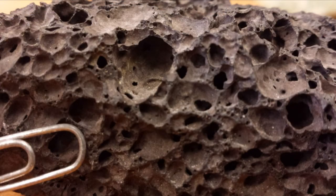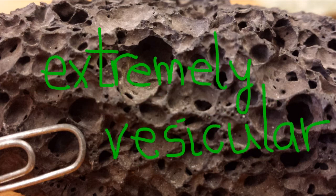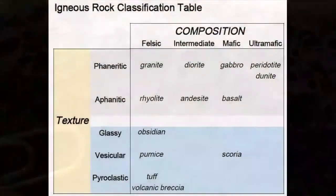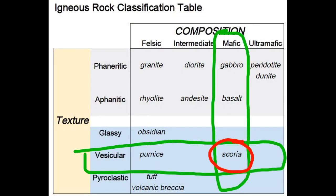This rock is also fine textured, affinitic, and it's mafic in composition — so it's still a basalt. But note the overwhelming abundance of vesicles. So instead of calling this rock a vesicular basalt, this highly vesicular basalt is called scoria instead.